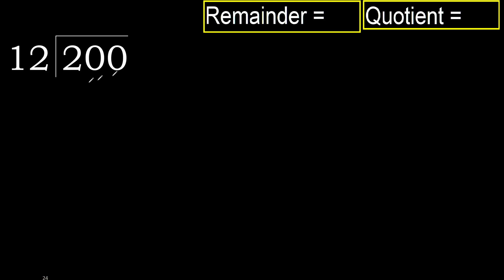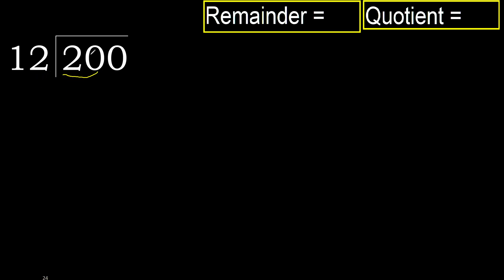200 divided by 12. 2 is less, therefore next. 20 is not less, therefore with 20 and 12,